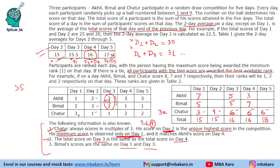On day 2, Chatur scores 9, and the total is 15, so Akhil and Bimal together score 6. Akhil is ranked 2nd, so Akhil can score 4 or 5, and accordingly Bimal scores 2 or 1. On day 5, the total is 18 and Bimal is 1st while Akhil is 3rd. Chatur scores 6. Possible combinations are 7, 6, 5 or 8, 6, 4. We cannot have 9 here because the unique highest score was 9, already used by Chatur on day 2. So Bimal scores 7 or 8, and Akhil scores 5 or 4 on day 5.